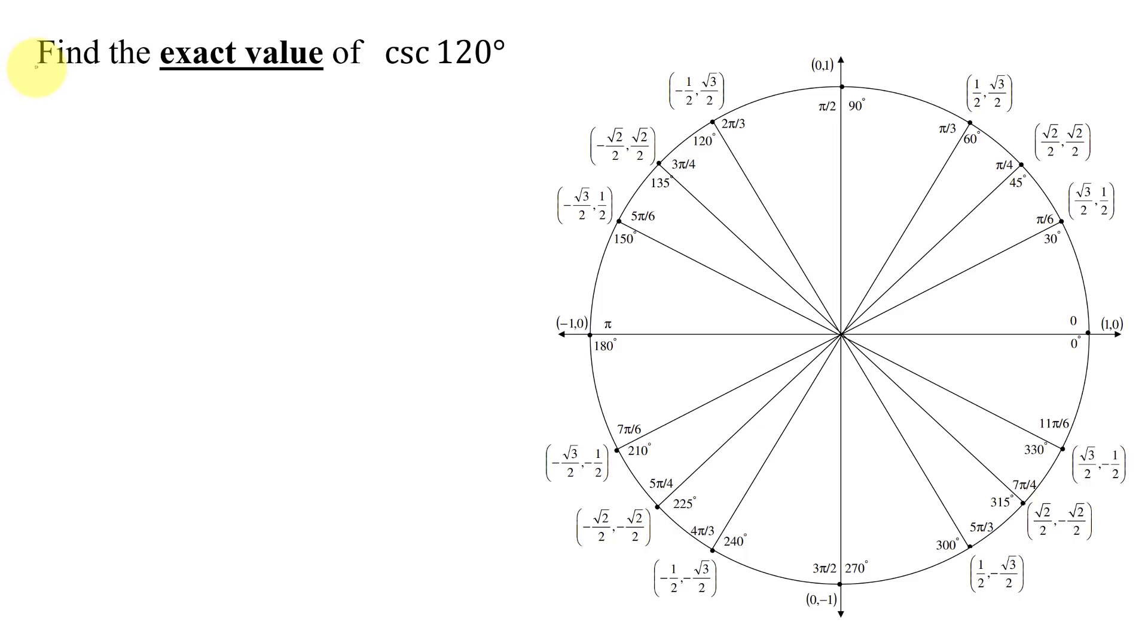In this example, I need to find the exact value of the cosecant of 120 degrees. As it says exact value, this means do not use your calculator as that will give you a decimal approximation.